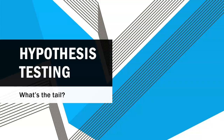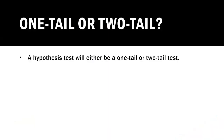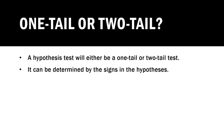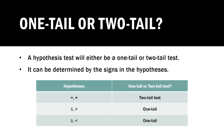Part of hypothesis testing is figuring out what the tail is. Every single hypothesis test will either be a one-tail or a two-tail test, and that can all be determined by looking at the signs in our hypotheses. If your hypotheses are equal to and not equal to, that's a two-tail test. If you have greater than or less than, then it's a one-tail test. So the first question we ask ourselves is: are we dealing with a one-tail or a two-tail test?